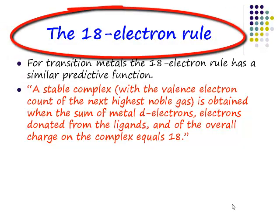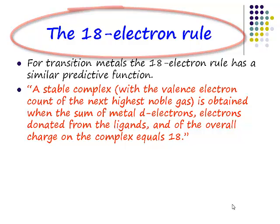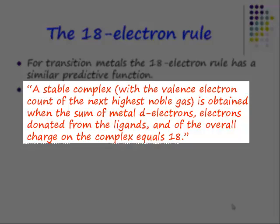The 18-electron rule is essentially the equivalent of the octet rule for transition metal compounds. A stable complex with a valence electron count of the next highest noble gas is obtained when the sum of the metal d-electrons...